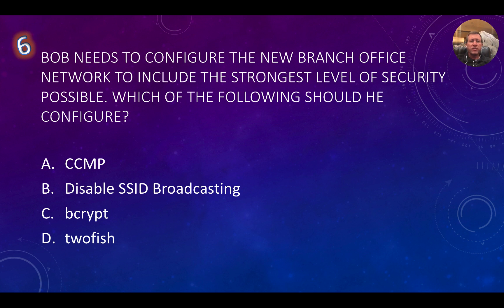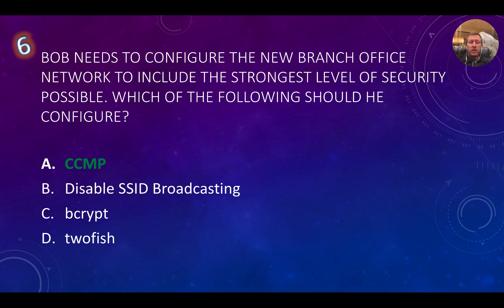Question number six: Bob needs to configure the new branch office network to include the strongest level of security possible. Which of the following should he configure? Hopefully you can eliminate C and D right off the bat. This comes down to A and B. CCMP combined with AES in WPA2 versus disabling SSID broadcasting. Disabling SSID is a good idea to hide the network from average users, but the SSID is still broadcast in a certain form, so it's not truly the strongest security. The strongest level is still encryption — CCMP with AES under WPA2.